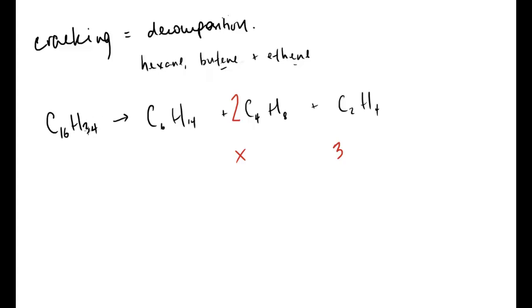Shorter alkanes are more useful, therefore make more money. What's important in an exam: do not just write more useful. The key thing is they are more useful and therefore they make us more money. That's the reason we're looking to crack.